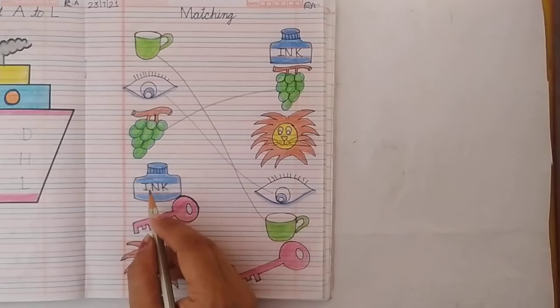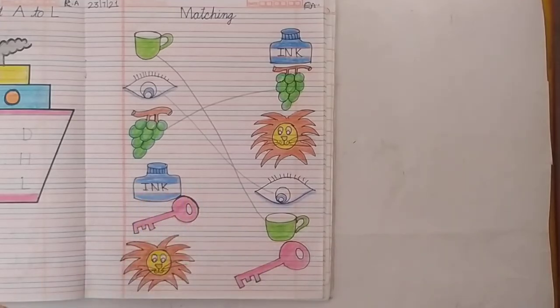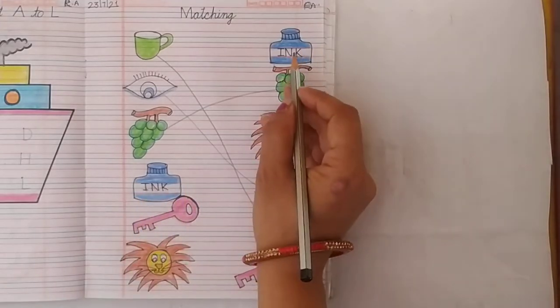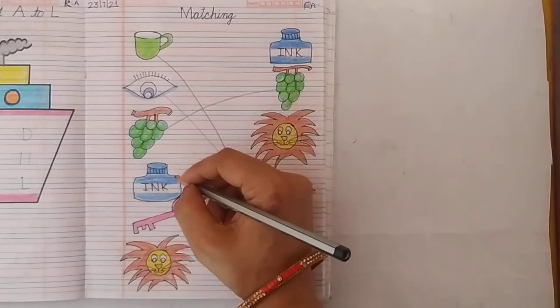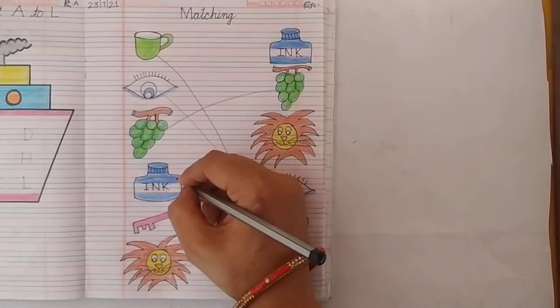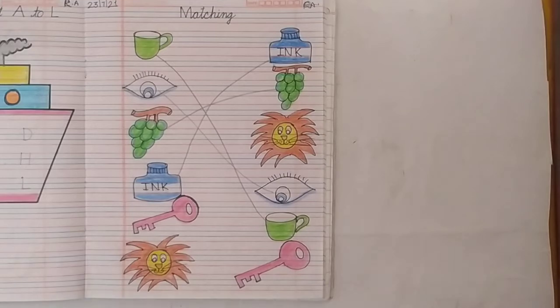This is ink pot. I for ink pot. And we match the ink pot with the same picture. And here is ink pot. So we match ink pot with another ink pot. Like this.